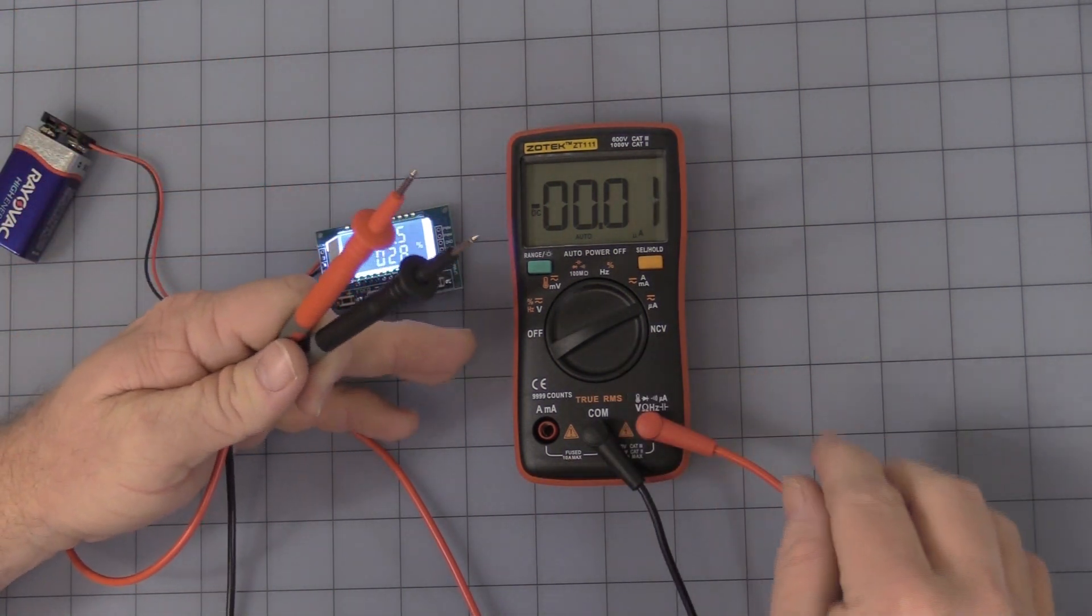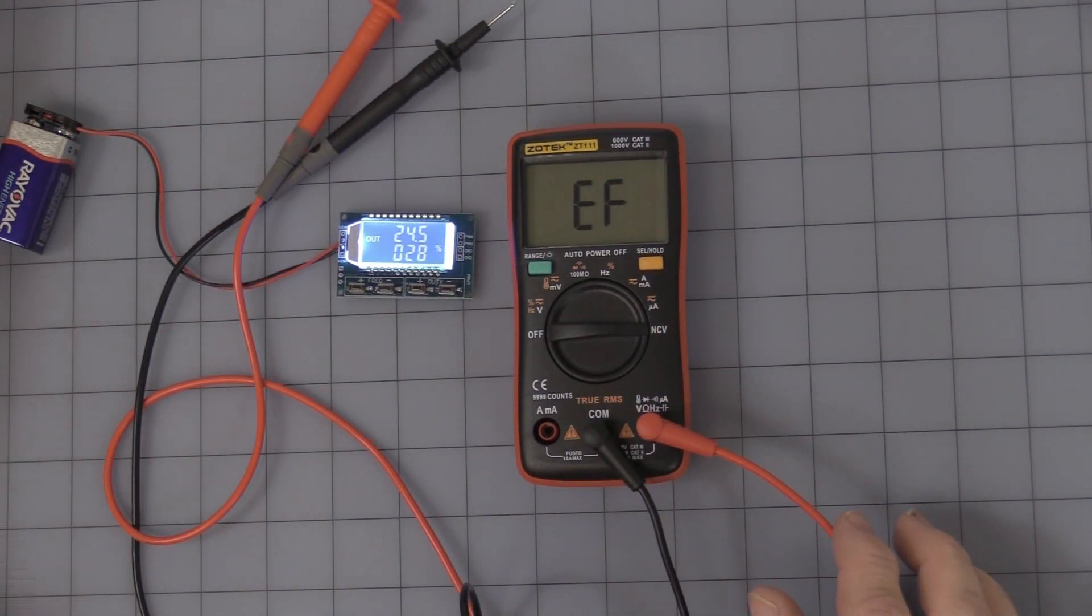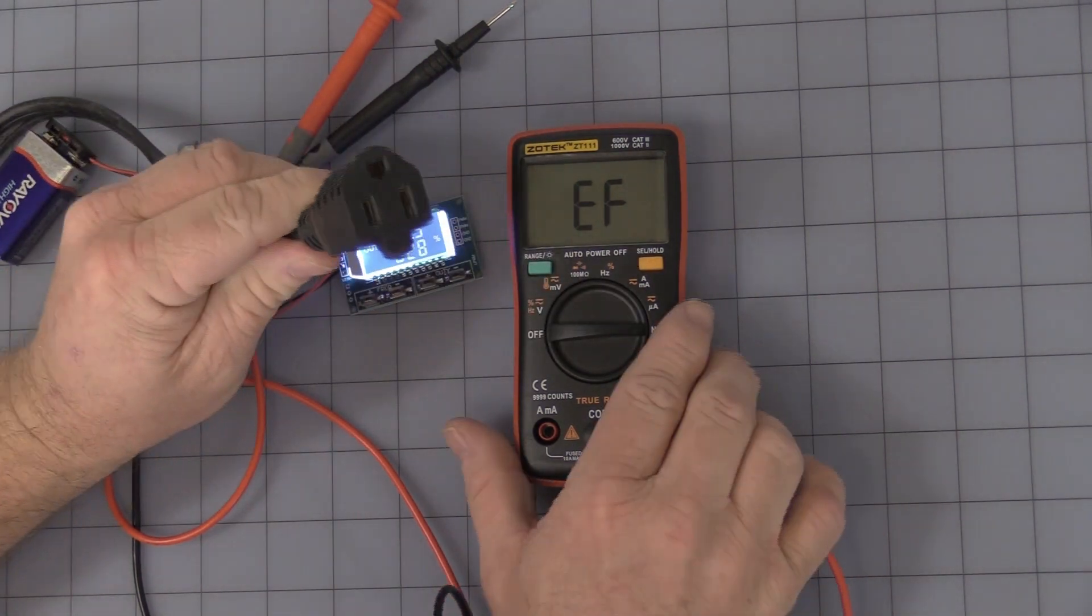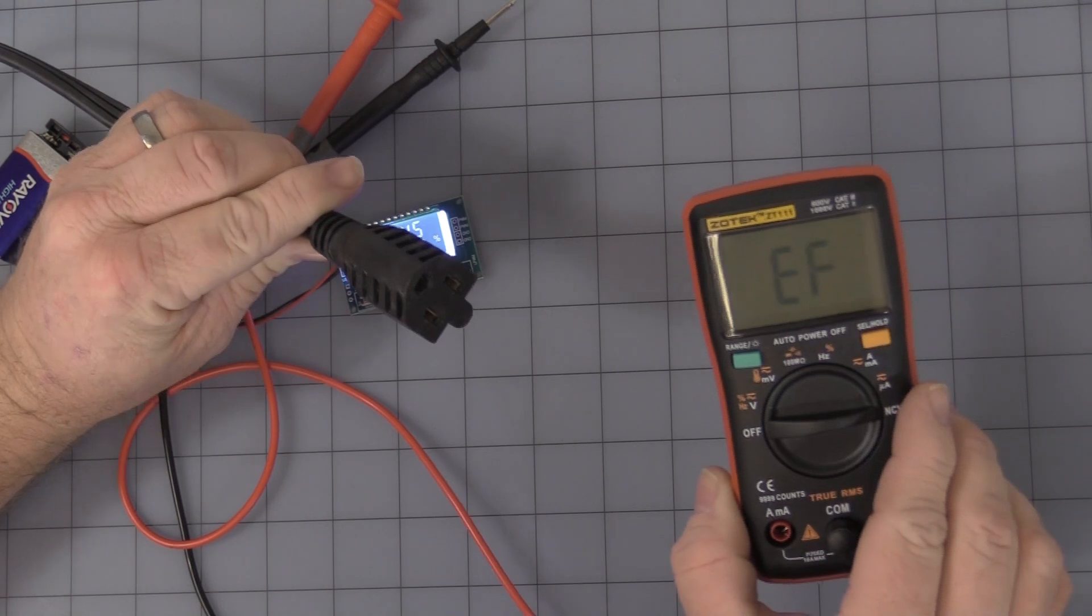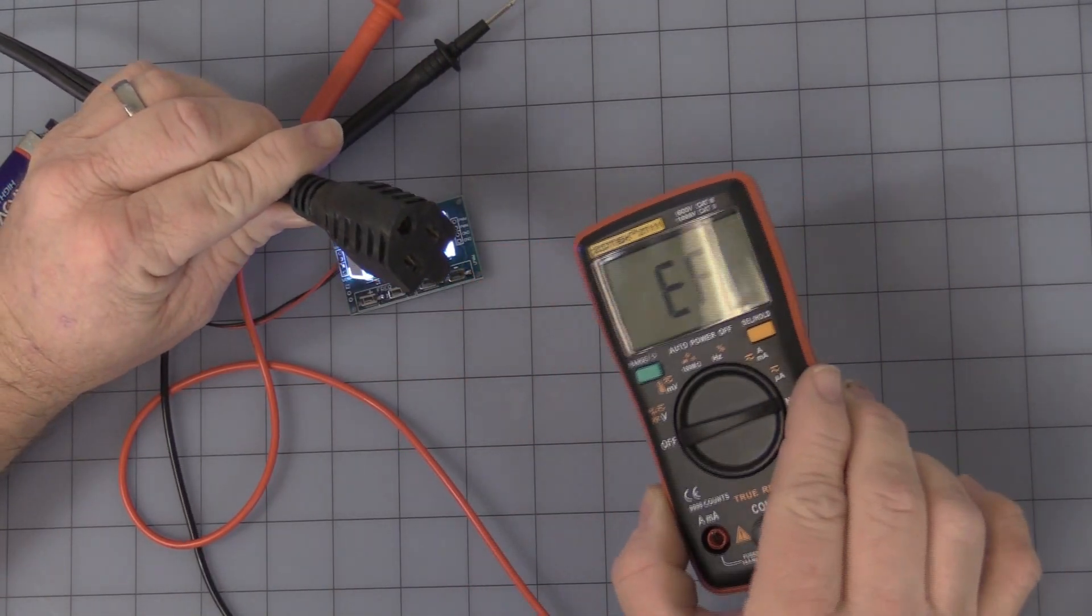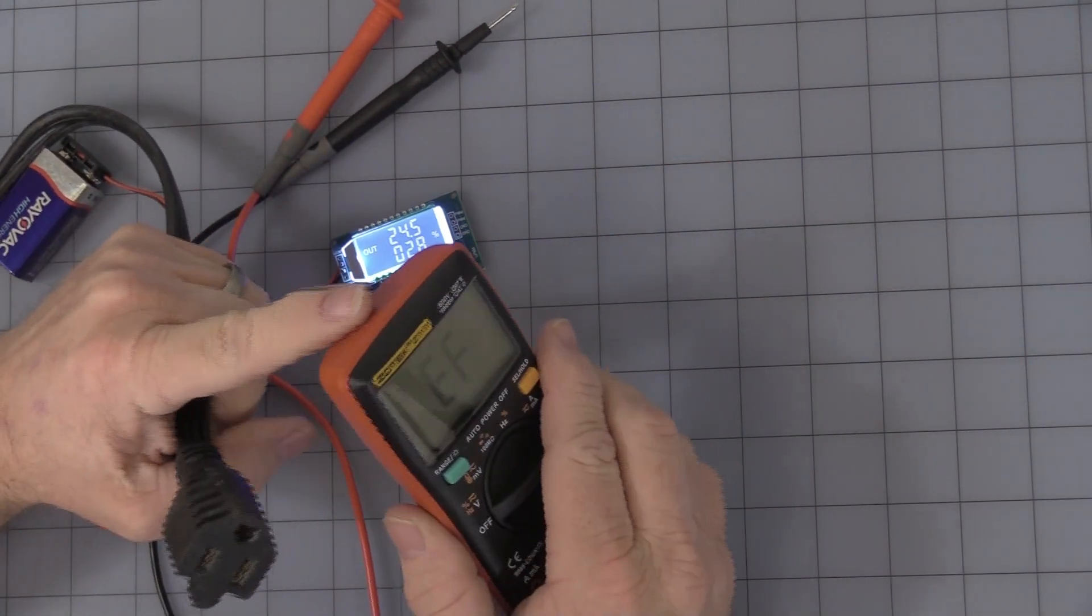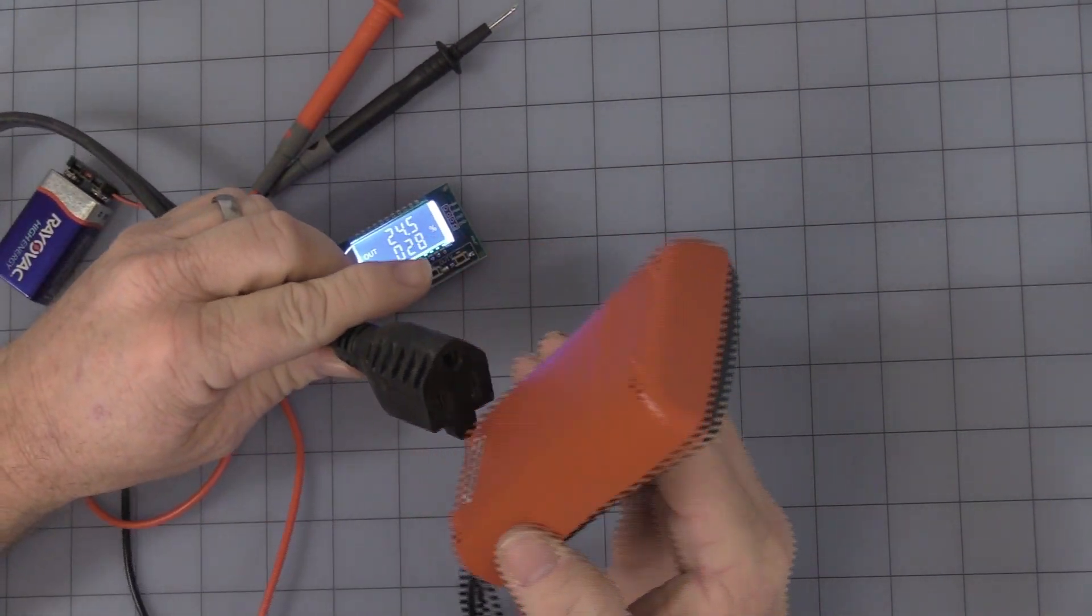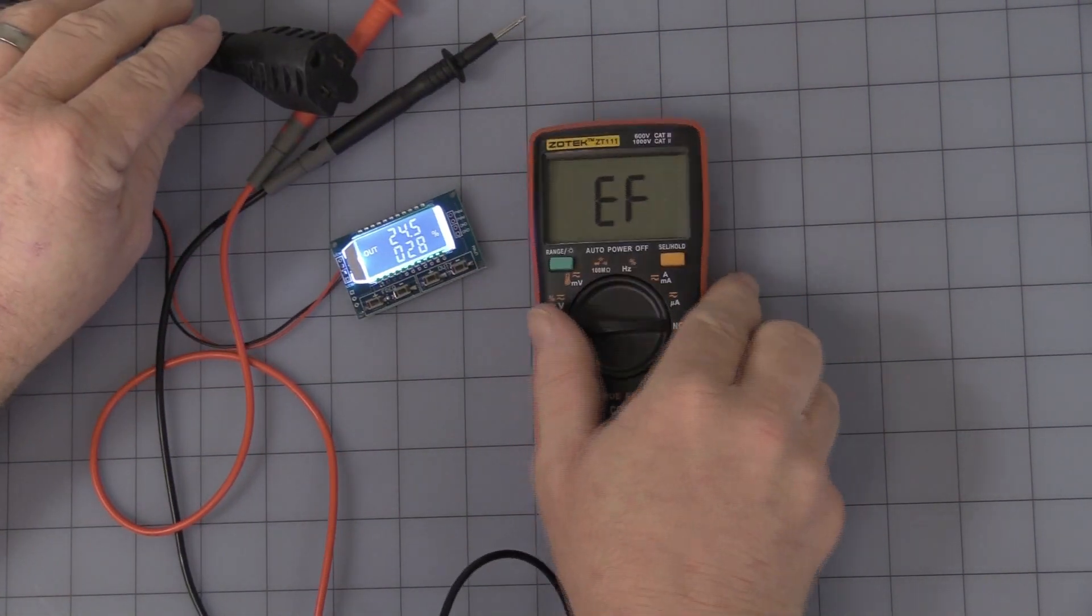The last one, NCV, which is a near field AC sniffer. This is our AC cord. It's able to sense that there is AC there. It's a nice little safety feature. It seems to be at the tip.